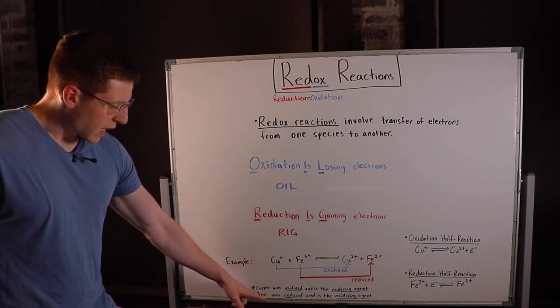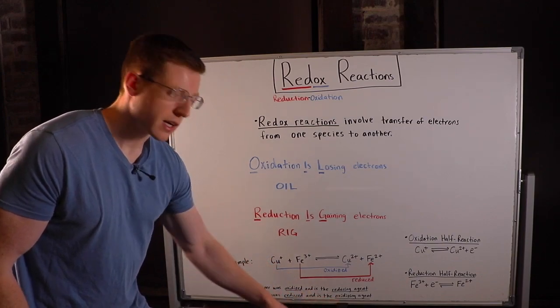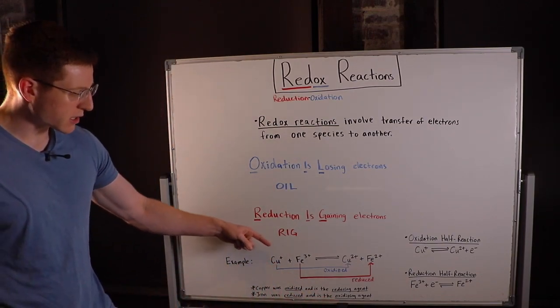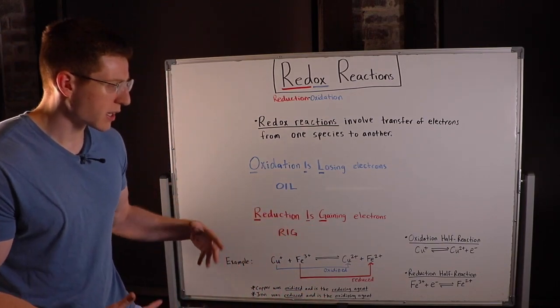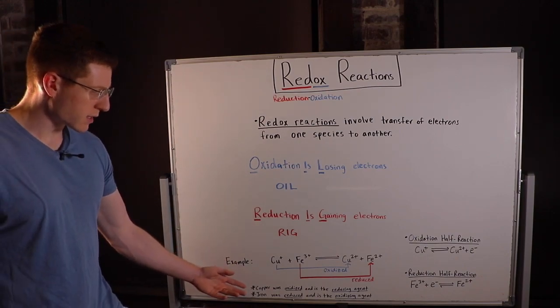Conversely, iron was reduced and it is the oxidizing agent because it allowed for the oxidation of copper. It oxidized copper. So they go along in pairs like this.